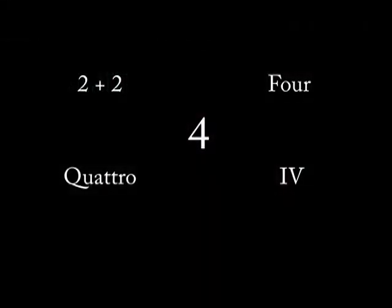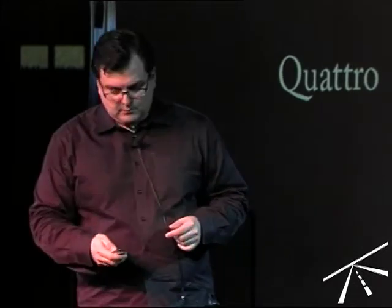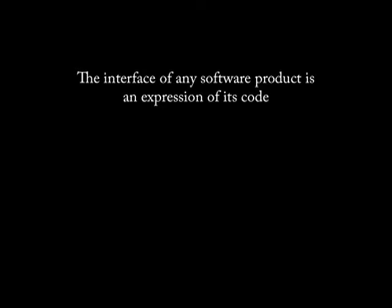There are many other ways to express that concept: two plus two, you could spell out 'four,' you can do it in another language like 'quattro,' and there's the Roman numeral version. So four is a mathematical concept that can be expressed in multiple different ways. And I think you need to start asking yourself: isn't that the same thing for interface design? The interface of any software product is nothing more than an expression of its code. When you make the desktop app, the web client, or the mobile version, that's not the product — that's an expression of the product.